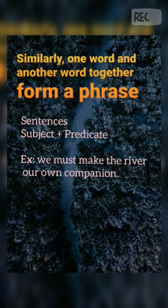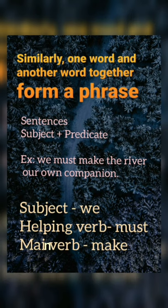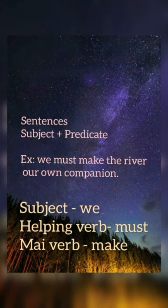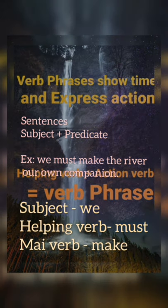Word plus word equals a phrase, which forms sentences. Now, a sentence has two main parts: subject and predicate. Example: 'We must make the river our own companion.' Here, the subject is 'we.' Once we have identified the subject in the sentence, everything else becomes the predicate.